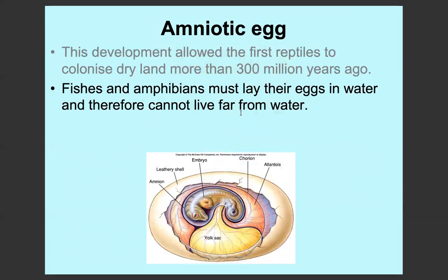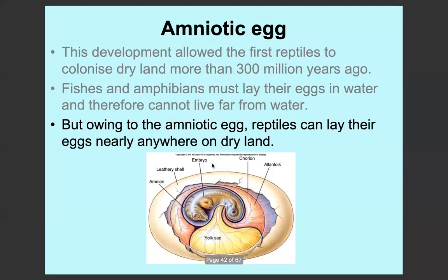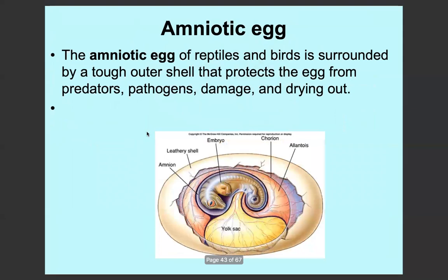Fish and amphibians must lay their eggs in water so they have to live in aquatic environments, but other animals can live further away. Reptiles, and then after which mammals, birds, etc., can also lay their eggs on dry land. Humans and all mammals wouldn't have a tough outer shell because they are viviparous and the egg develops inside them, but reptiles and birds, which are oviparous, need this hard shell to protect the egg.